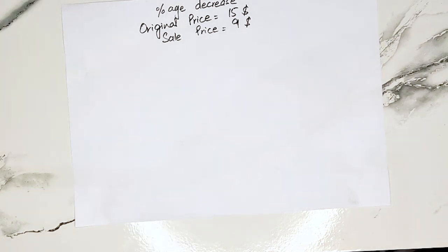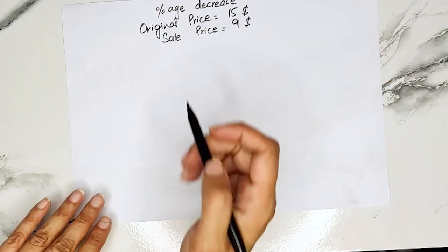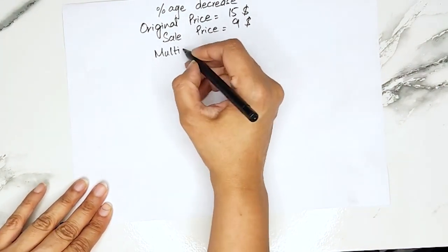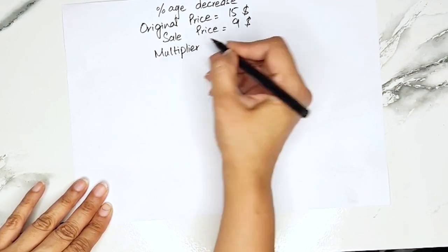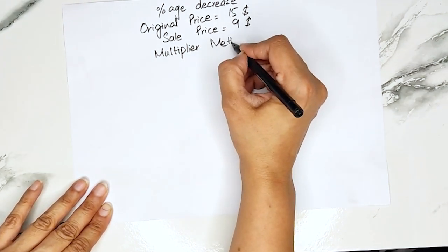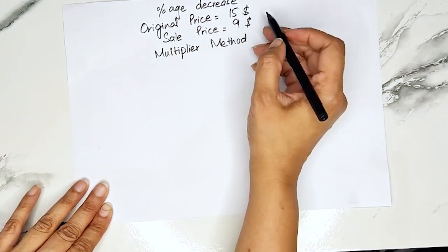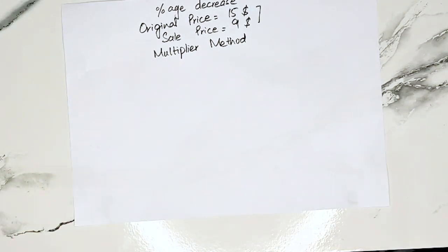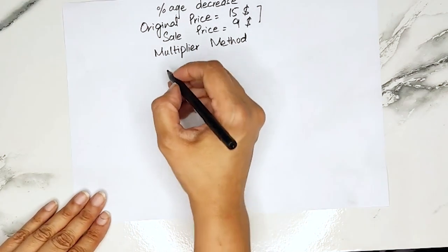Now let's calculate the percentage decrease using the other method, called the multiplier method. We will be taking the same example: the original price of the item is $15 and the sale price is $9. The multiplier is how many times the original value has decreased.